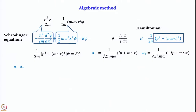We have already defined the ladder operators. a⁻ = (1/√(2ℏmω))(ip + mωx), and a⁺ = (1/√(2ℏmω))(−ip + mωx). Note: we are not writing the operator hat explicitly, but please do not get confused about which is an operator and which is a number. We will see later why one is called minus and the other plus.